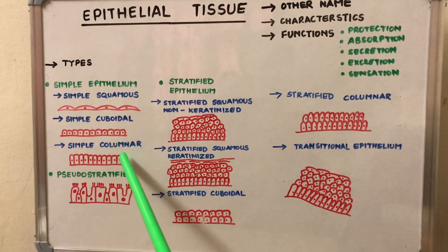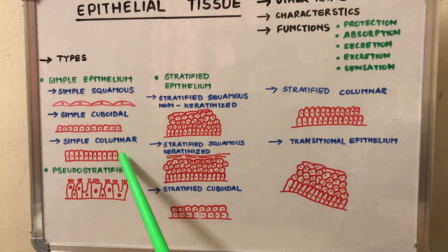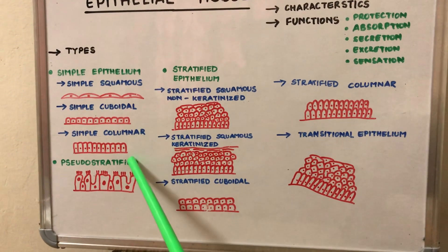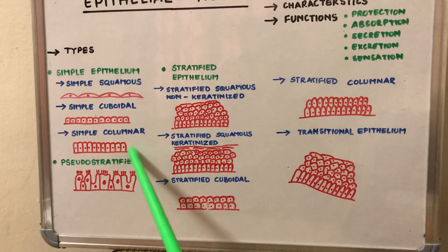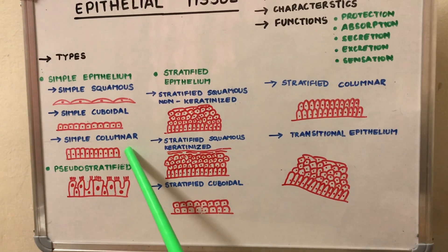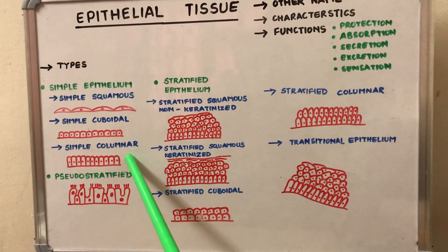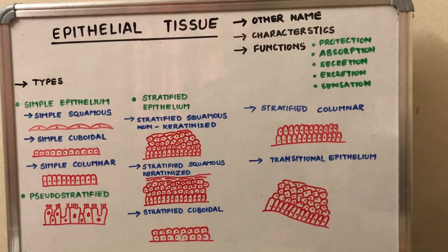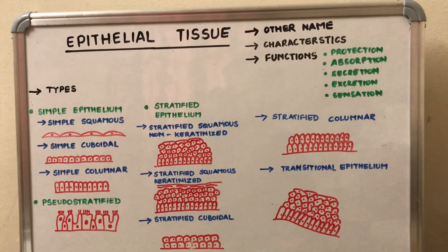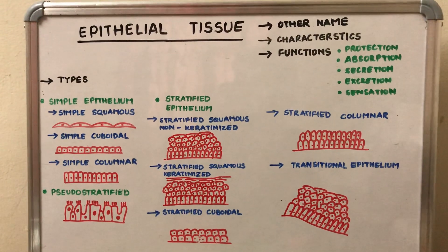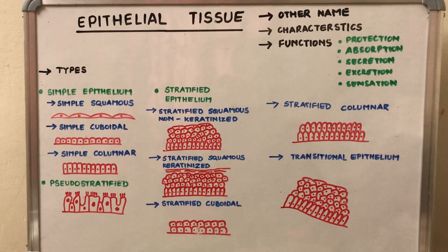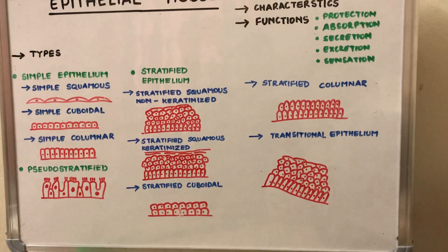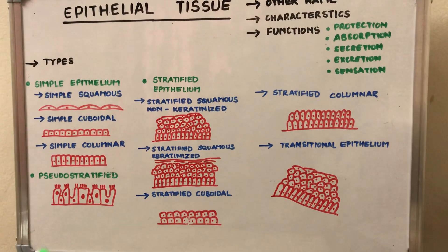The third type is the simple columnar epithelium, which has column-shaped cells whose length is more than the width. This epithelium is present on secretory and absorptive surfaces in our body, including the uterine tube, the uterus, the Eustachian tube, the tympanic cavity, and the small bronchioles and bronchi.